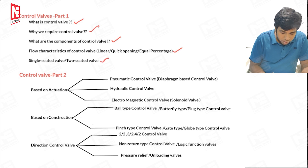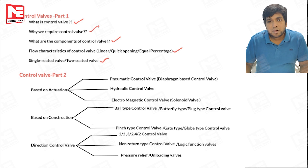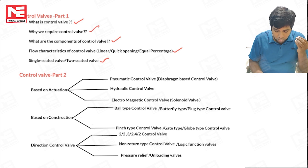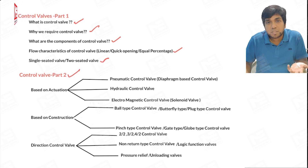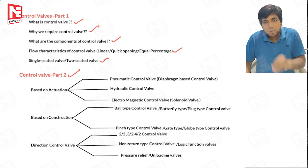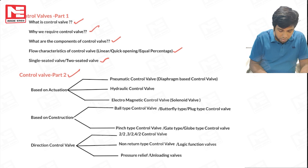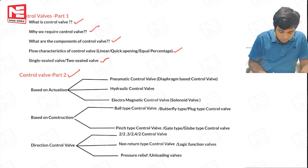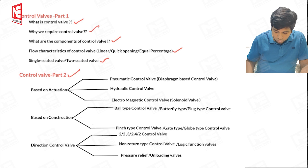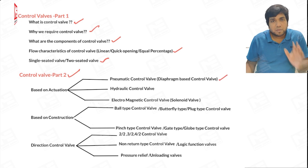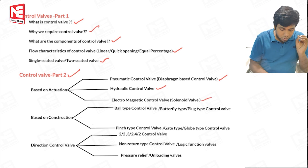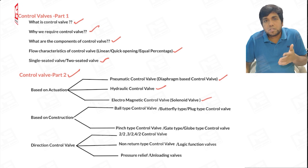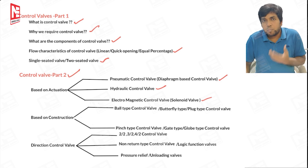In today's class I'm going to discuss different types of control valves based on actuation — that is, how the control valves are divided based on the mechanism used to drive the stem. Based on that actuation mechanism, control valves are classified into three types: pneumatic control valve, hydraulic control valve, and electromagnetic control valve.